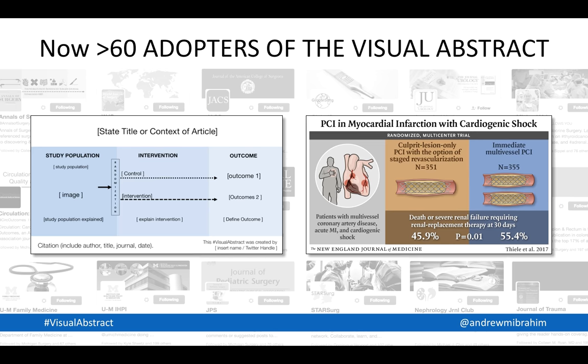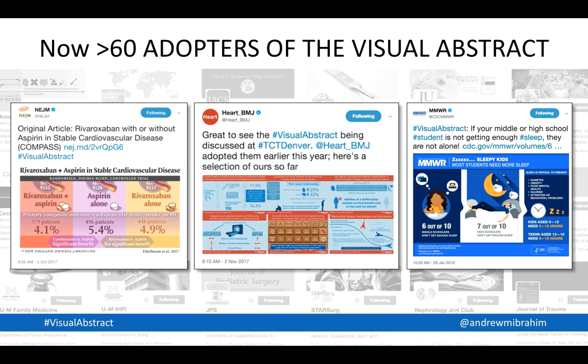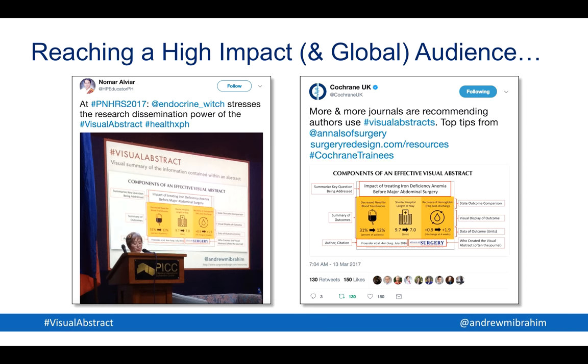What's been fun is that as journals started to adopt it, we were openly sharing the templates we were using at Annals of Surgery. It's been really fun to watch each journal take that template but really make it their own — put their own branding, their own style, their own character — while keeping the same principles and ideas intact. You can find many of these just by going on social media and looking up the visual abstract hashtag.